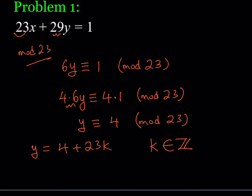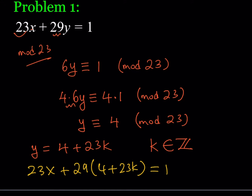This is my parametric expression for y. I can plug it into the equation to get something for x. The next step is solving for x, so I replace y with 4 + 23k in the equation and try to isolate x.